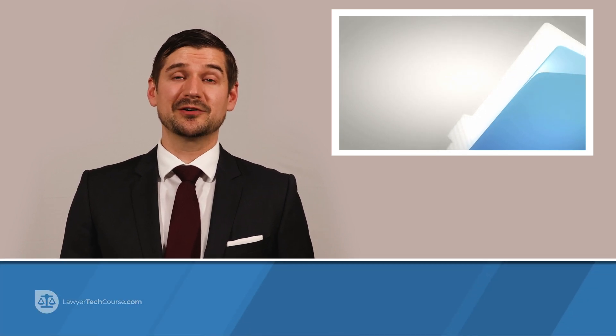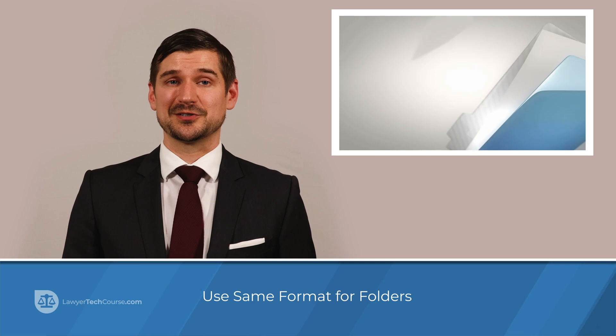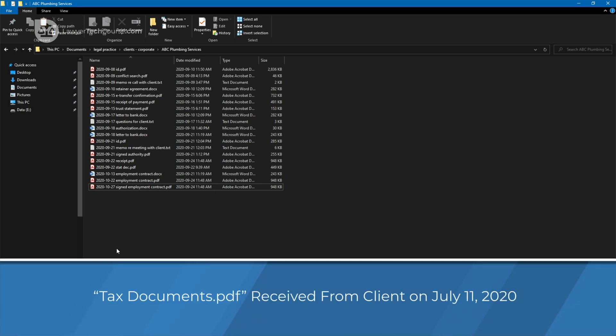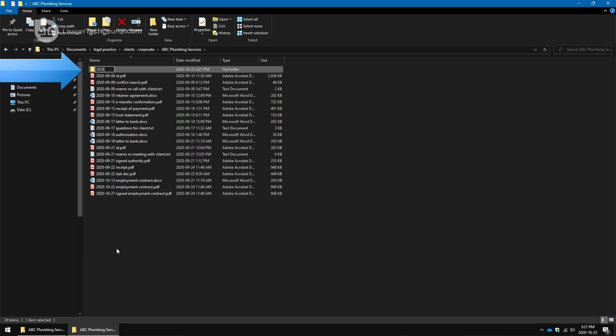When used for folders, the numerical year, month, day format ensures that folders will appear chronologically. When digital documents are received by email from correspondence, the files can be placed in these folders without them being renamed. For example, if on July 11, 2020, a client sent me a copy of a scanned document that is named tax documents, I'd store the file in a folder named 2020-07-11 docs from client.